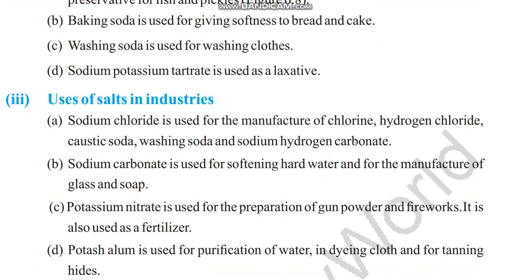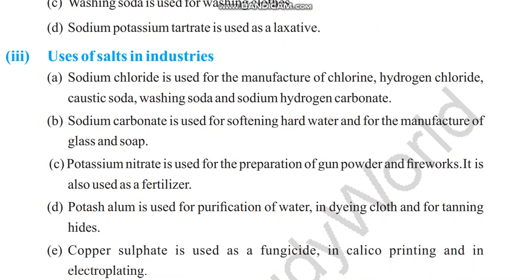Uses of salt in industries: Sodium chloride is used for the manufacture of chlorine, hydrogen chloride, caustic soda, washing soda, and sodium hydrogen carbonate. Sodium carbonate is used for softening hard water and for the manufacture of glass and soap. Potassium nitrate is used for the preparation of gunpowder and fireworks, and also as a fertilizer. Potash alum is used for purification of water, dyeing cloths, and tanning hides. Copper sulfate is used as a fungicide, in silico printing, and in electroplating.